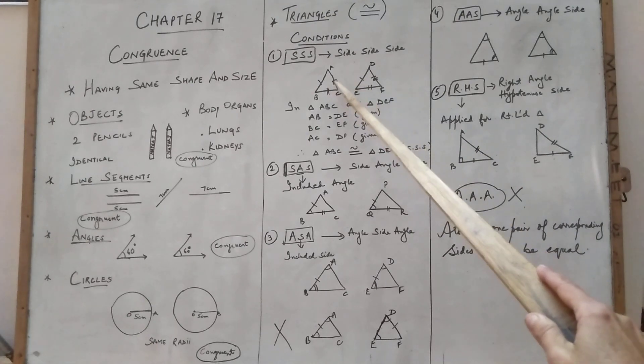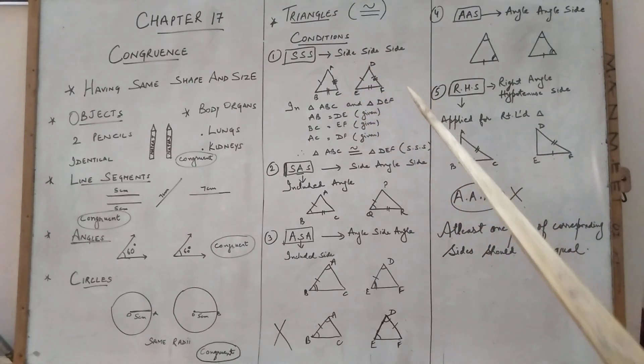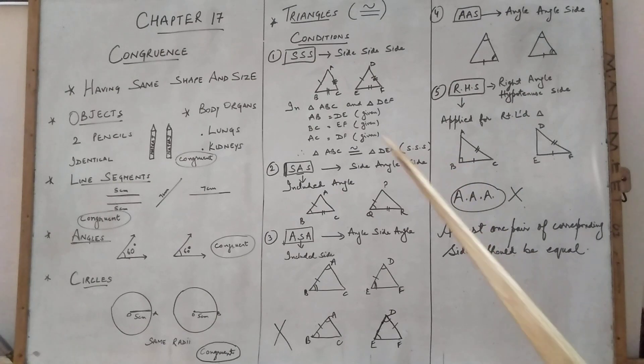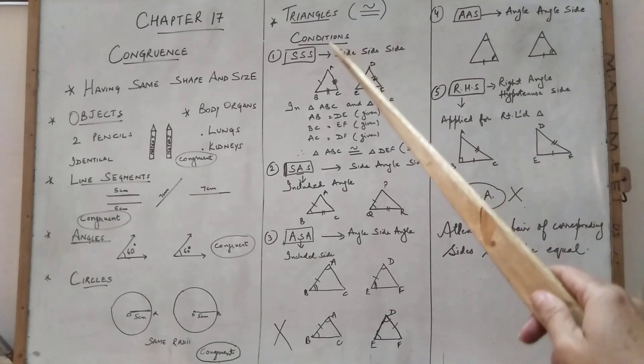So that you will be able to know which side is equal to which side. Now whenever we have to congruent the triangles, we have to take 3 steps. Why? Because triangles are having 3 sides, 3 angles.